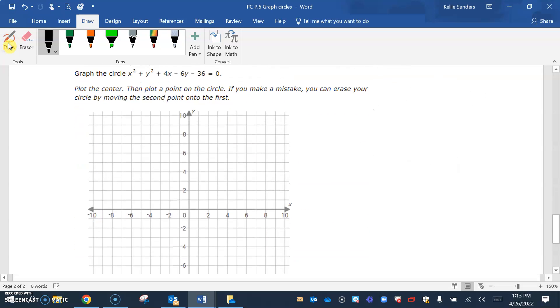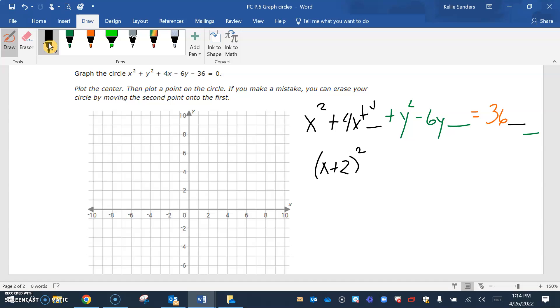And one last one. So I'm going to have my x squared and my 4x, my y squared and negative 6y, equals a positive 36. Half of 4 is 2, 2 squared is 4.